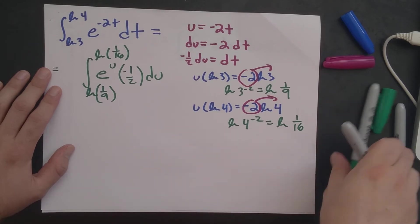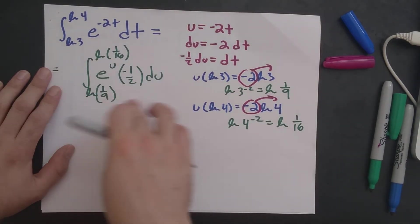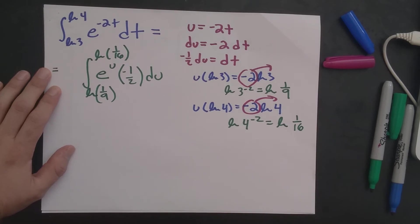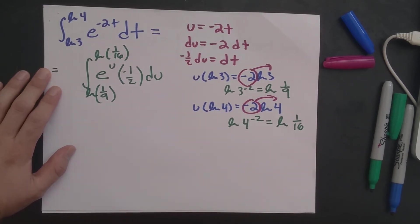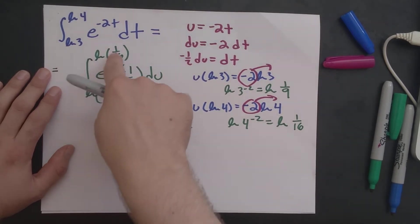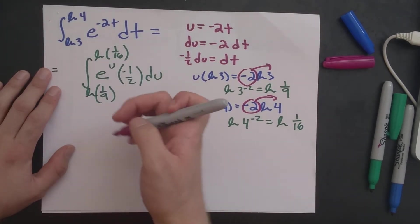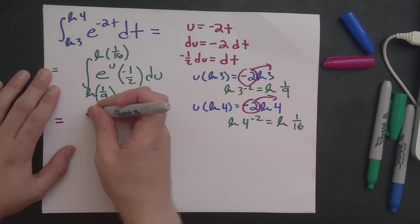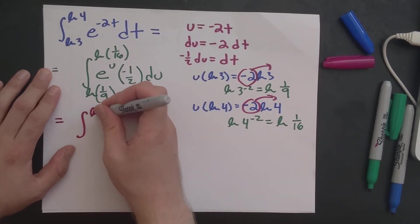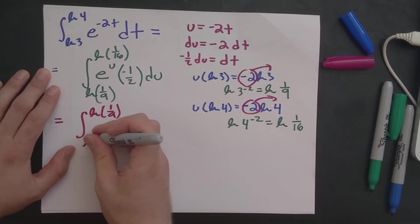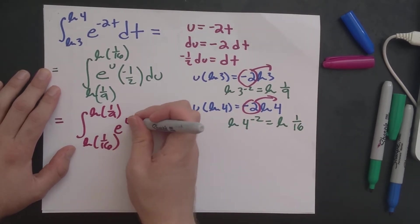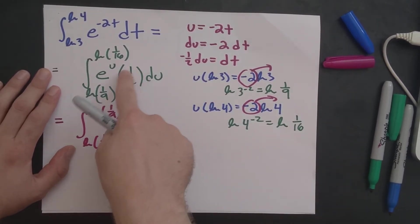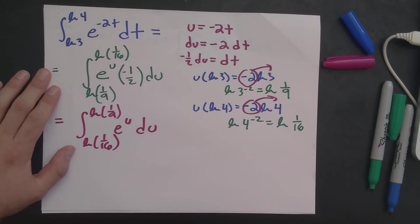Okay, what else can we do here? So this is where we are, but if you check the slides, this doesn't match any of the answers on the slides. So we still have to do a little bit more manipulation. And the manipulation we have to do is swap the bounds here, log of 1 ninth to log of 1 sixteenth. If we swap the bounds, we end up changing the sign of our integral.